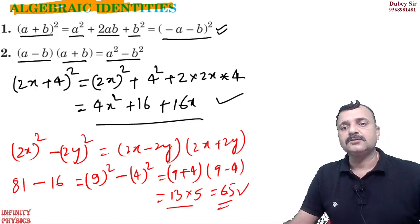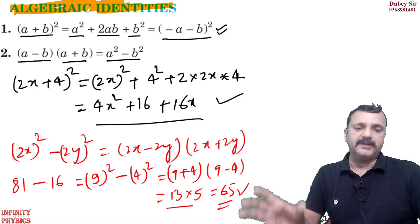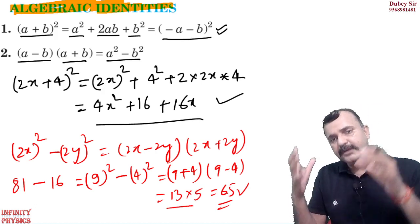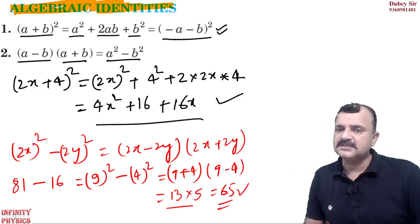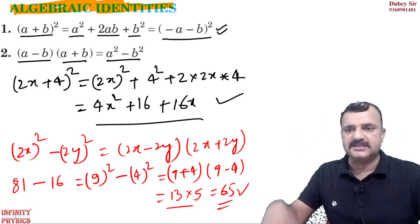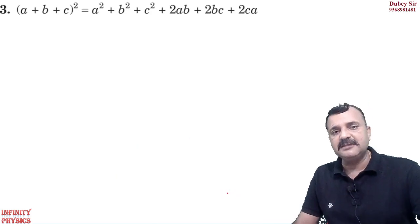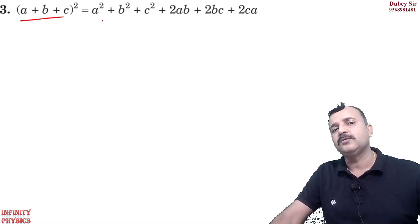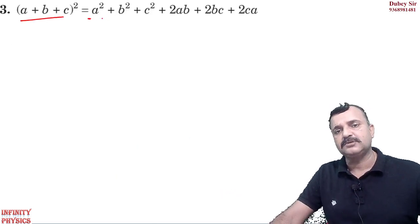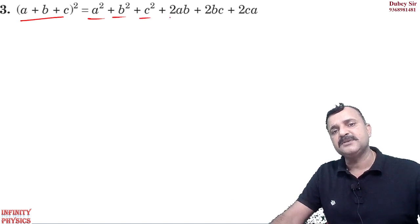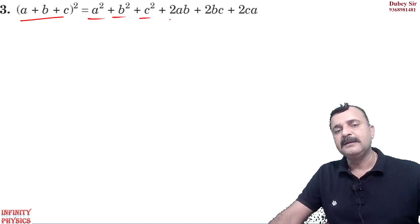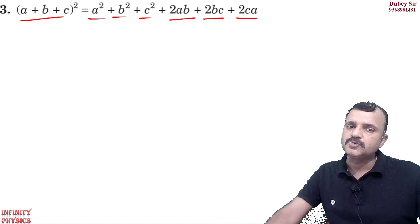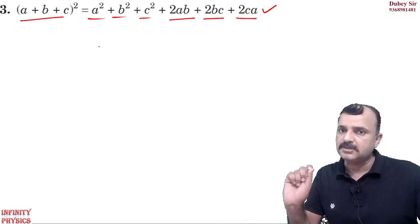So this is a way to calculate. If any equation is given, you expand it and then calculate the result. Some mathematics calculations become easy because of these formulas. Same way, the next formula you can see: (a + b + c) whole square is equal to a square plus b square plus c square plus 2ab plus 2bc plus 2ca.